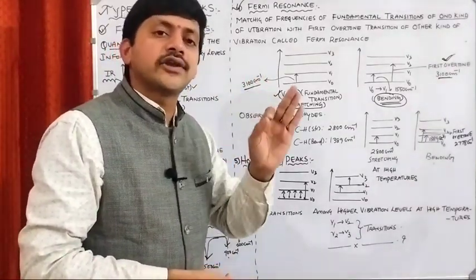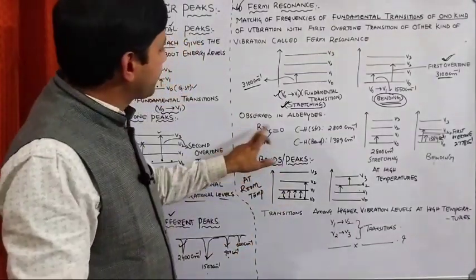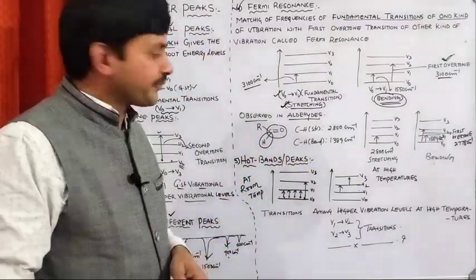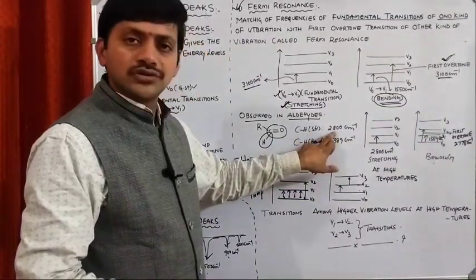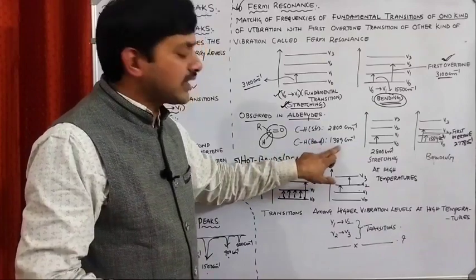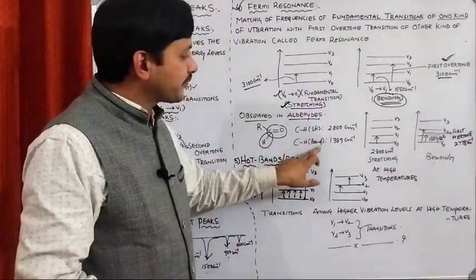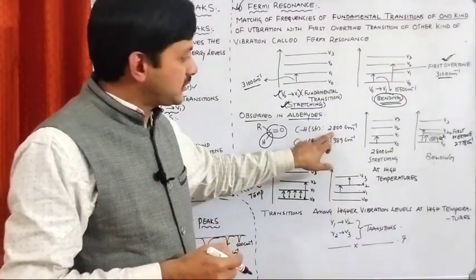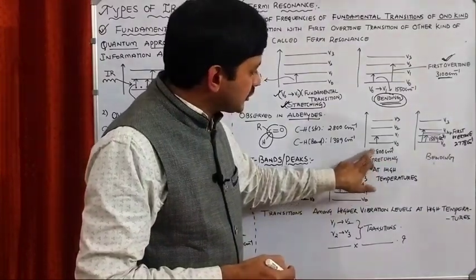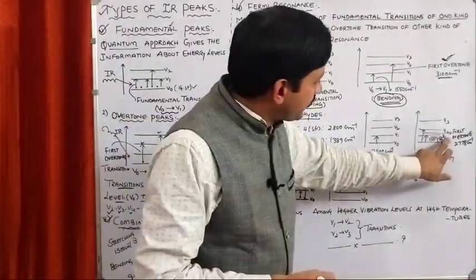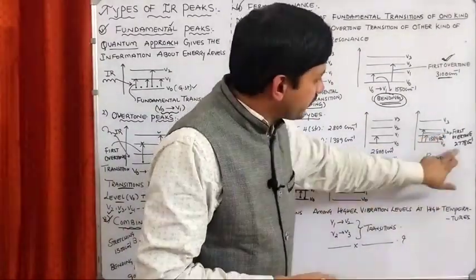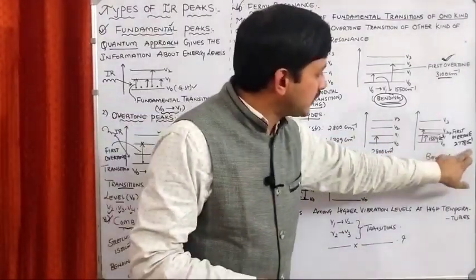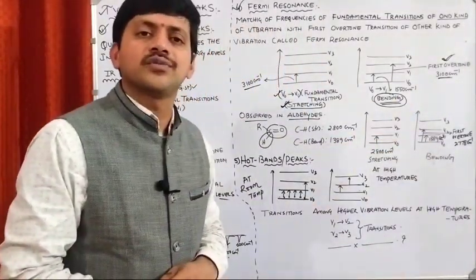Fermi resonance is generally observed in aldehydes. In aldehydes, we have a C=O bond and a C–H bond. The C–H stretching frequency is 2800 cm⁻¹, and the C–H bending frequency is 1389 cm⁻¹. Doubling the bending frequency gives approximately 2778 cm⁻¹, which is the first overtone. The values 2800 and 2778 are approximately the same, so this situation is called Fermi resonance, and Fermi resonance peaks are observed in aldehydes.